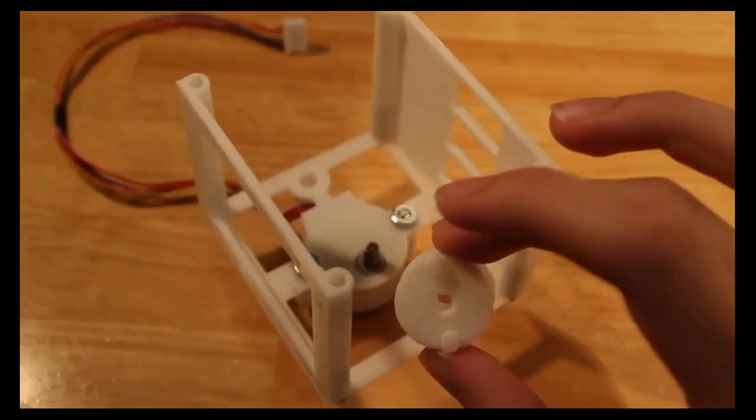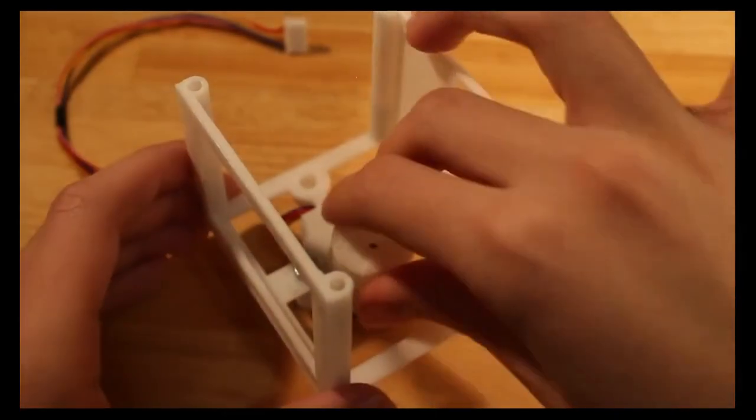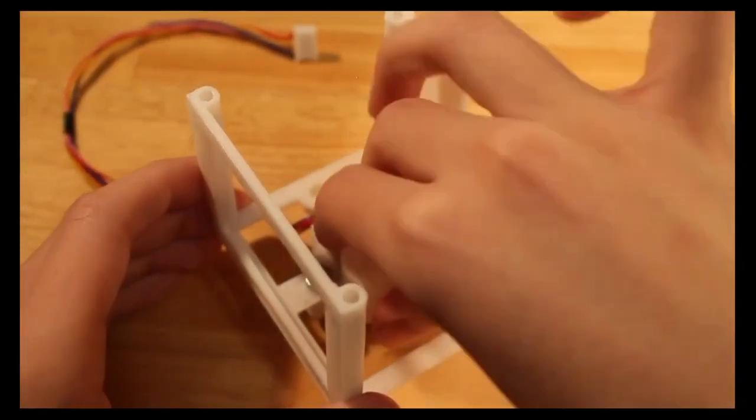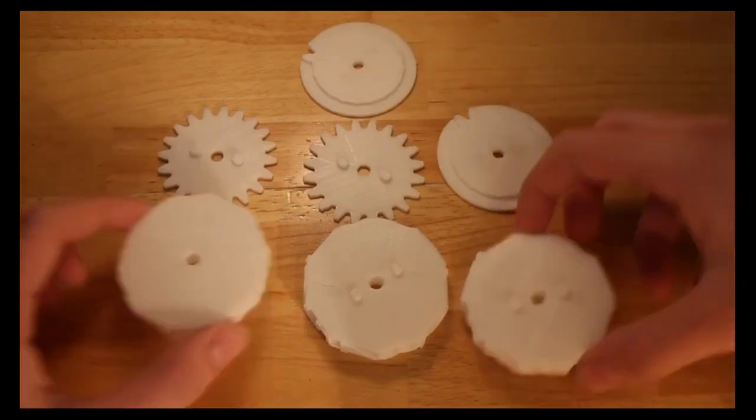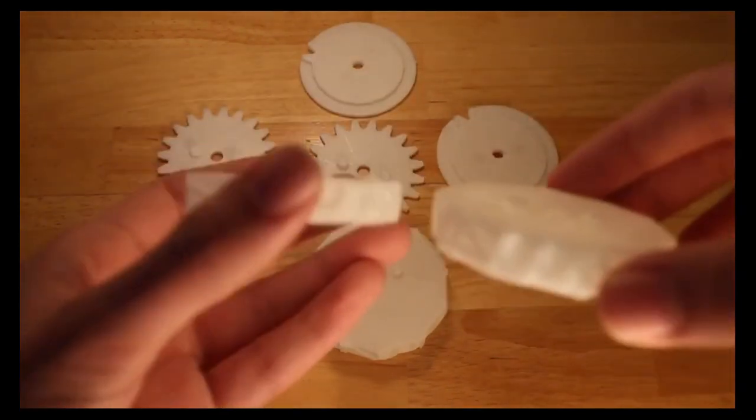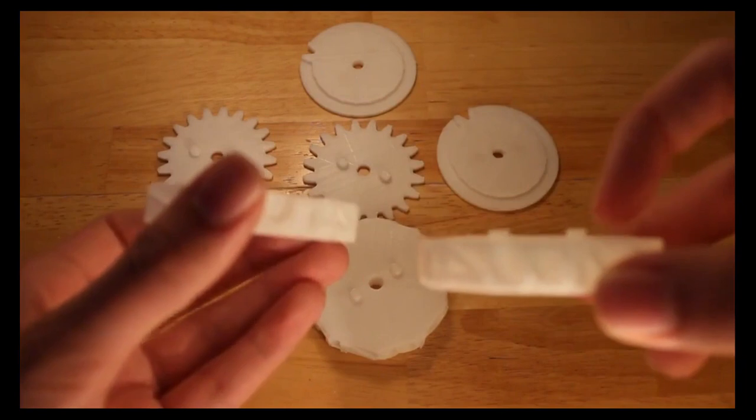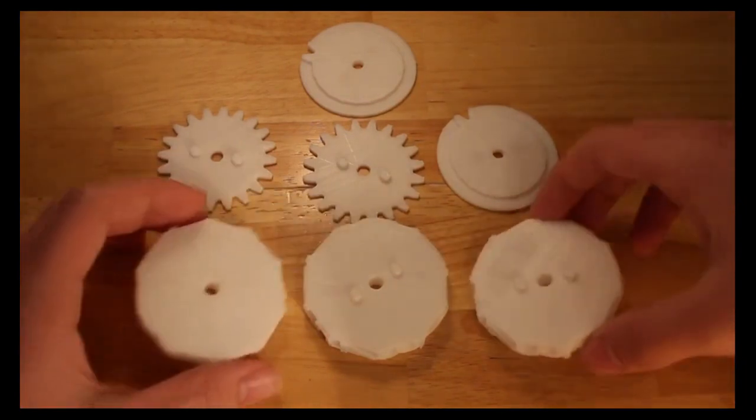Next you're going to add the adapter to the motor. And after that we're going to assemble the number wheels. Note that there are two different number wheels. Two of them have extra pegs on top and the other one doesn't.